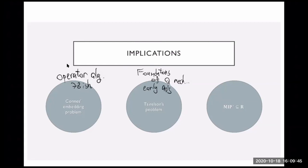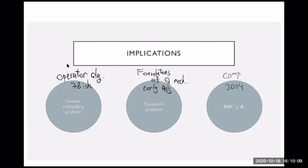The third problem is whether every language in the complexity class MIP* is computable or decidable. This is from around 2004, and it's in complexity theory. So it seems as if each one of these questions lives in a different place: Connes' embedding is pure mathematics in operator algebras, Tsirelson's problem involves mathematical models for quantum mechanics, and complexity theory is from computer science. So what are the relations?